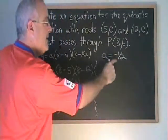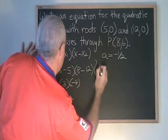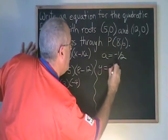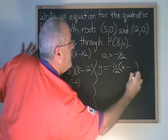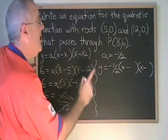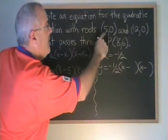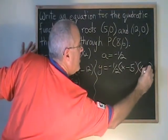Plugging this a value into the same form of the equation, we get y equals negative 1/2 times x minus, and then we use the x coordinates of the zeros again, 5 and 12.